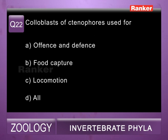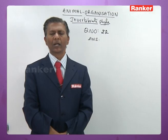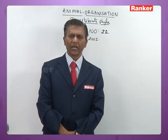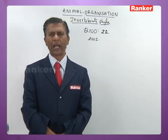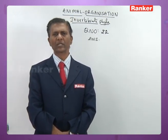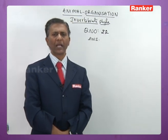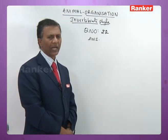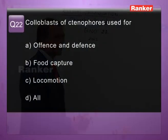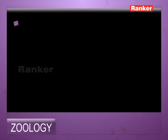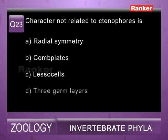Twenty-second question: colloblasts of ctenophores are used for — a) offense and defense, b) food capture, c) locomotion, d) all. In ctenophores, stinging cells are absent; in their place they have colloblasts or lasso cells, which help in food capture. So the correct answer for twenty-second question is b) food capture.